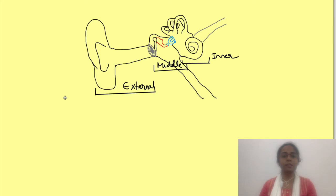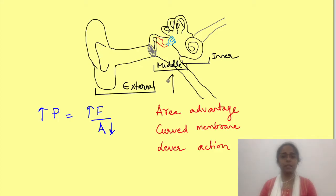So how does it occur? Fundamentally we have to increase the pressure changes in air. Now if you remember pressure is equal to force upon area. So pressure increase can occur either by increasing the force or decreasing the area. So this occurs by three mechanisms: area advantage, curved membrane and lever action. All of which are happening in this area of the ear which includes the tympanic membrane and the full middle ear. Area advantage works by decreasing the area where air vibration strikes while the other two work by increasing the force with which they strike.